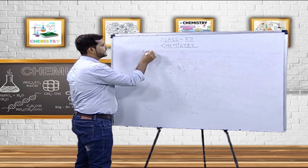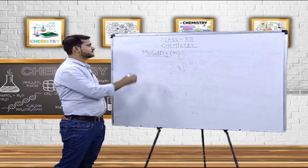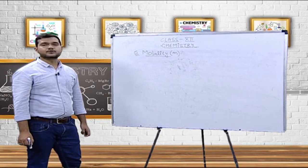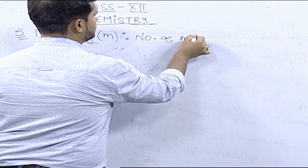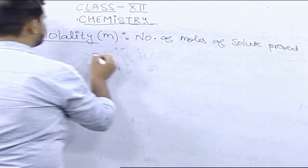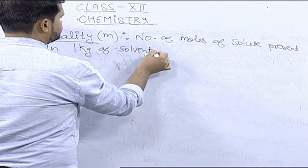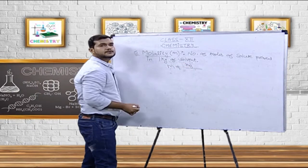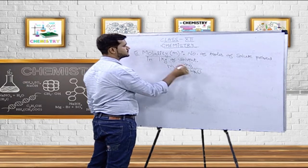There is another term called molality. This is the fifth method — we have done up to four methods in the previous video, the last one was molarity. Now this is molality. Molality is the number of moles of solute present in 1 kg of solvent. We can write molality as n_B, where B represents the solute, divided by W_A, the mass of solvent in kilograms.